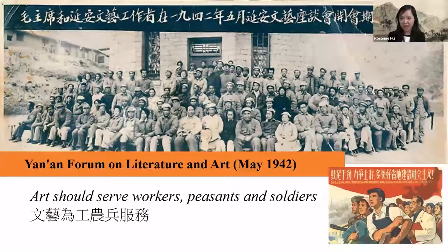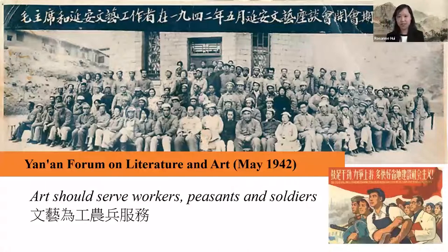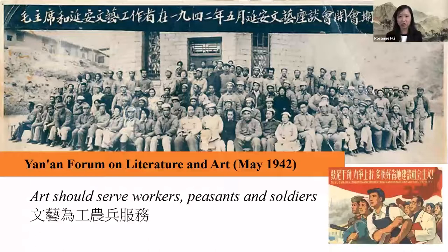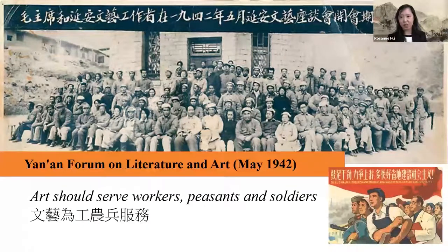Fu's unclear political standing was not his sole problem. The central government initially tried to promote art by prioritizing popular forms such as woodblock prints and New Year's paintings, considered more understandable by peasants. Since Fu was a traditionally trained classical artist, it was not helpful that his art form was underappreciated at the beginning of the new era. From 1949 to the mid-50s we see Fu transition from struggling for acceptance to achieving recognition from the new leadership.